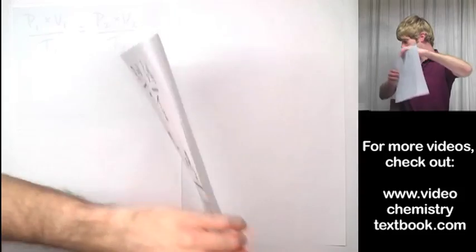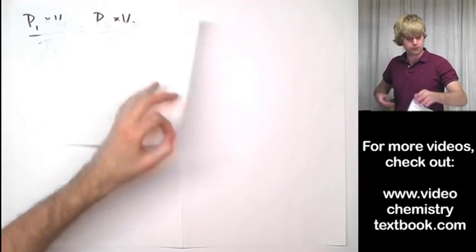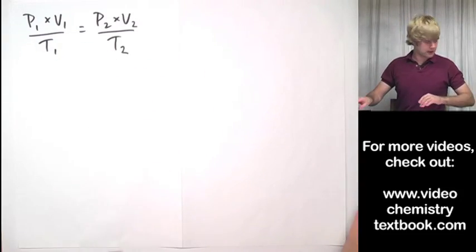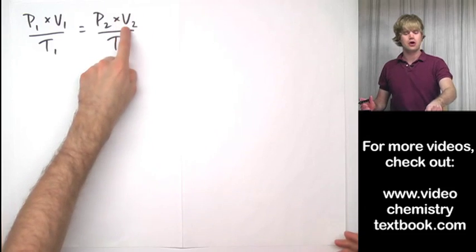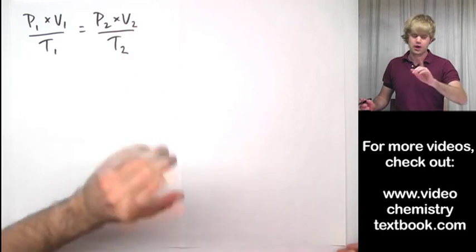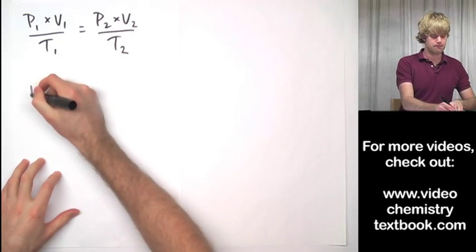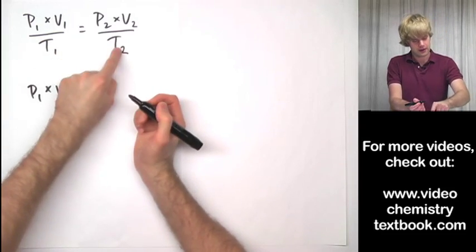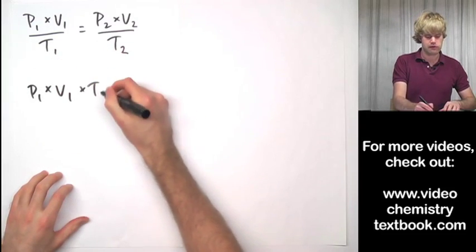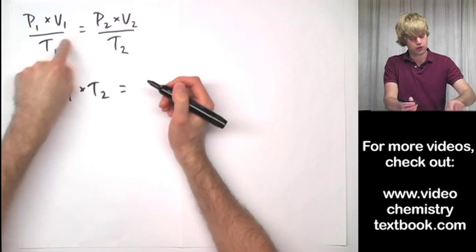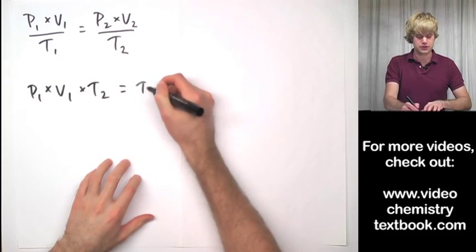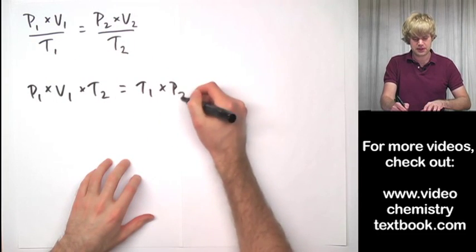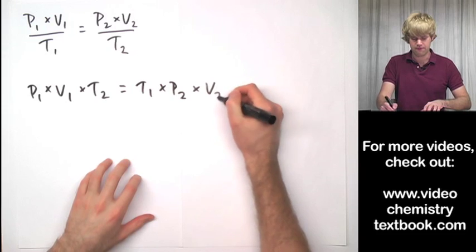Let's do one more example with the shortcut method. Here's the combined gas law again and this time let's solve for V2. I'm going to cross multiply again, so P1 times V1 times T2 equals T1 times P2 times V2.